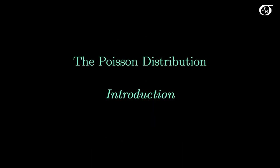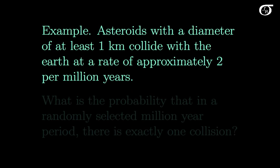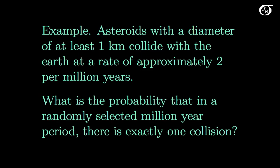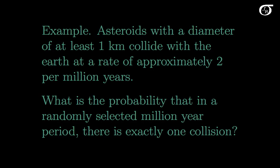Let's look at an introduction to the Poisson distribution, another important discrete probability distribution. Asteroids with a diameter of at least one kilometer collide with the Earth at a rate of approximately two per million years. We might be interested in the probability that in a randomly selected million year period there is exactly one collision, or different time periods, and under certain conditions the Poisson distribution would help us out here.